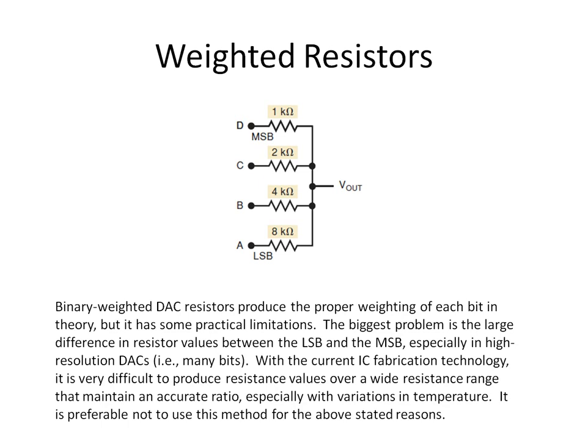One of the first ways that a digital to analog converter could be made is by using weighted resistors. In this diagram here, we see a 4-bit digital to analog converter. The binary input is being inputted at points B, C, B, and A. D is the most significant bit and A is the least significant bit.